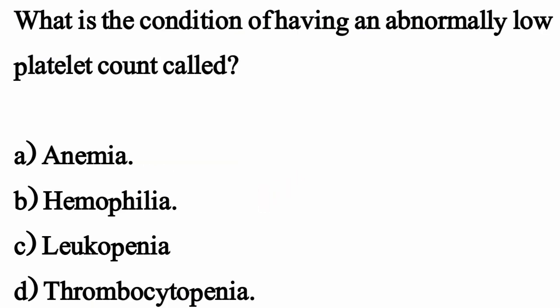What is the condition of having an abnormally low platelet count called? The correct option is Option D: Thrombocytopenia.